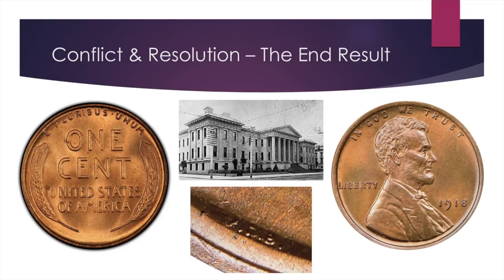The final outcome: 1917 saw Barber pass away, and the VDB initials were added back in 1918 — you can see them in the shoulder area of Lincoln, and they're still on the coins today. When Brenner passed away in 1924, he had not seen much more of his work come to fruition, but we can still remember him as one of the most iconic coin sculptors, as his design still circulates over 100 years later.